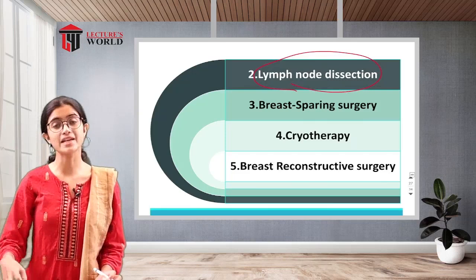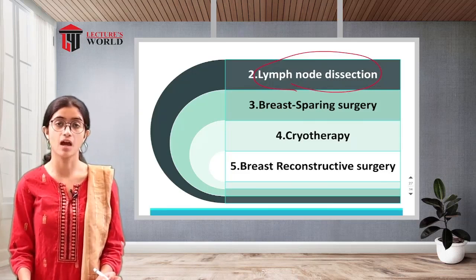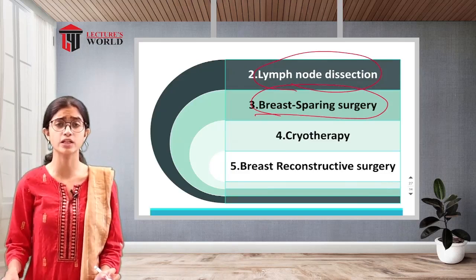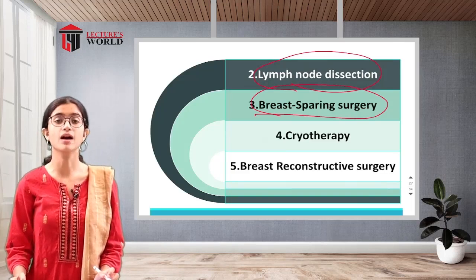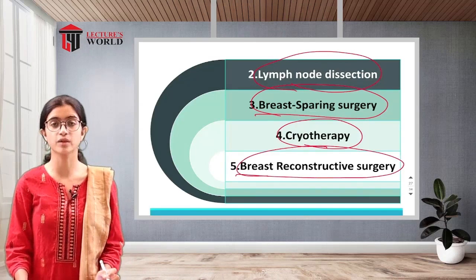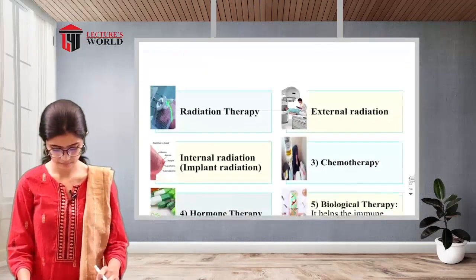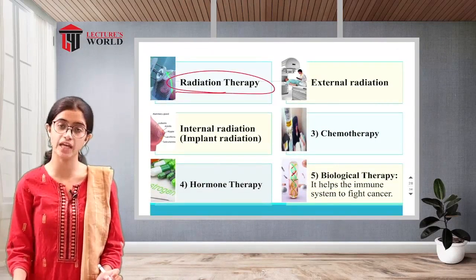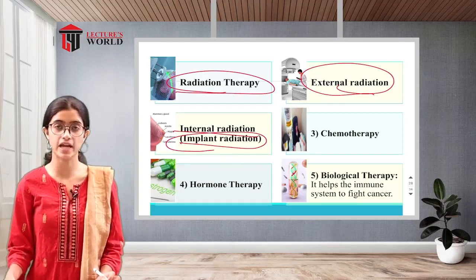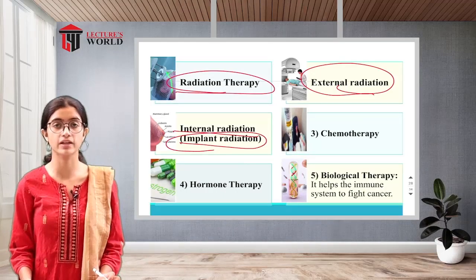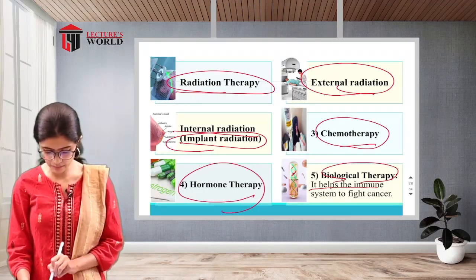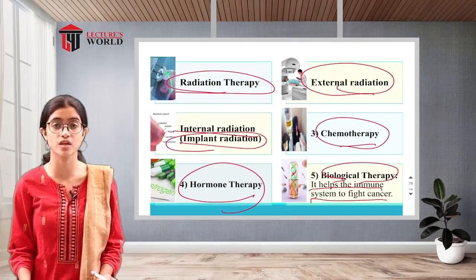Lymph node dissection removes 10 to 40 lymph nodes when there is lymph node involvement. Breast-sparing surgery removes the abnormal tissue and some surrounding healthy tissue while trying to spare the breast. Cryotherapy uses a freezing probe to destroy cancer cells. Breast reconstructive surgery rebuilds the breast. Radiation therapy can be external (rays given from outside) or internal (implant seeds placed in cancer areas). Chemotherapy administers drugs, hormone therapy uses hormones, and biological therapy helps the immune system fight cancer.